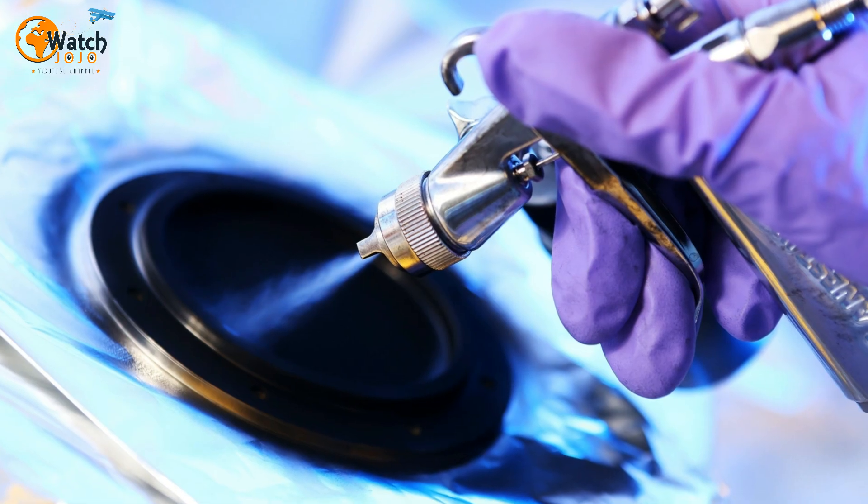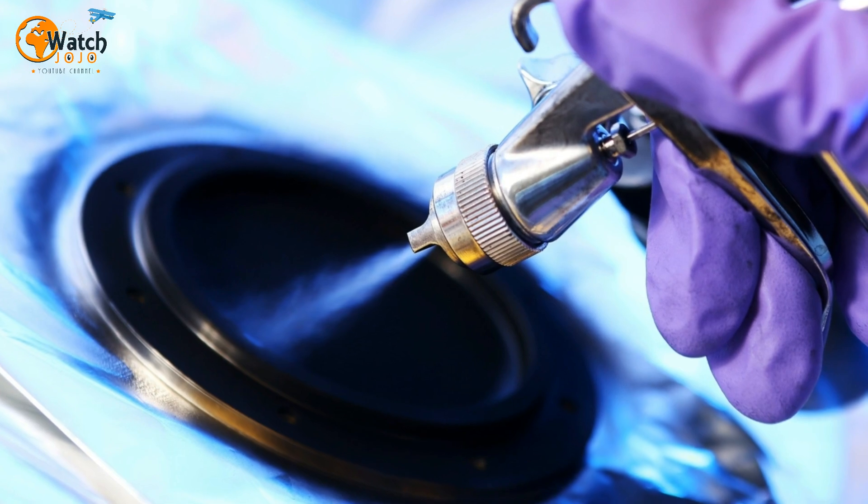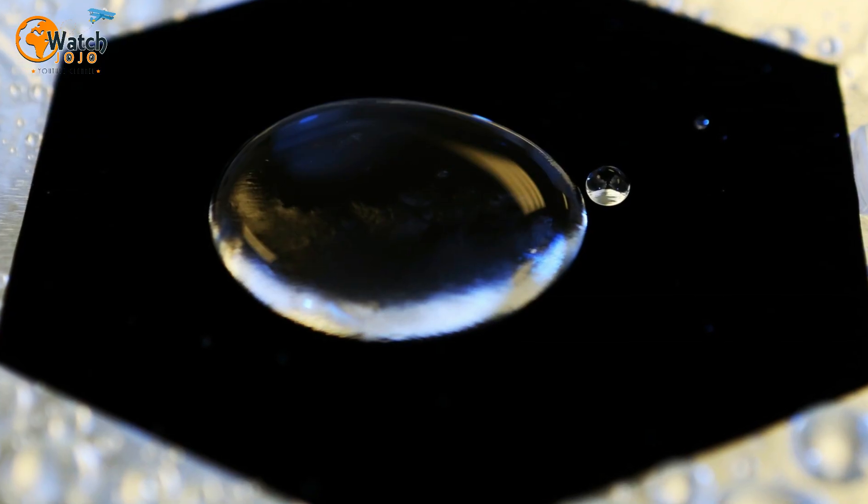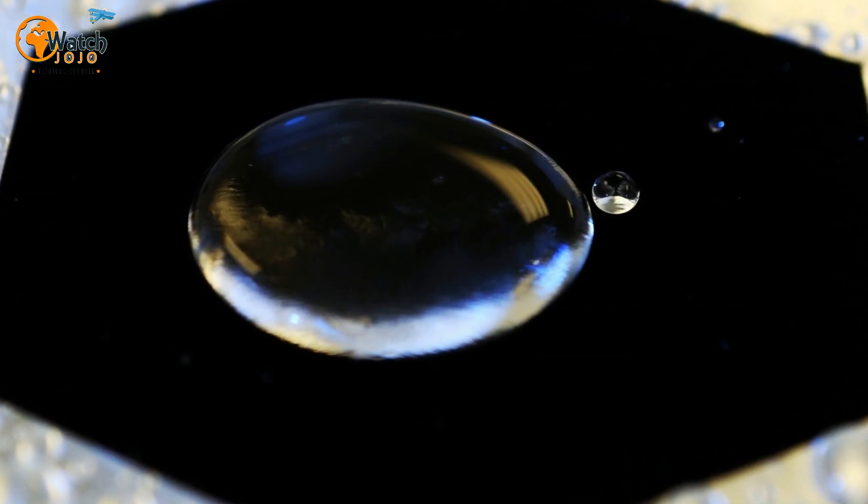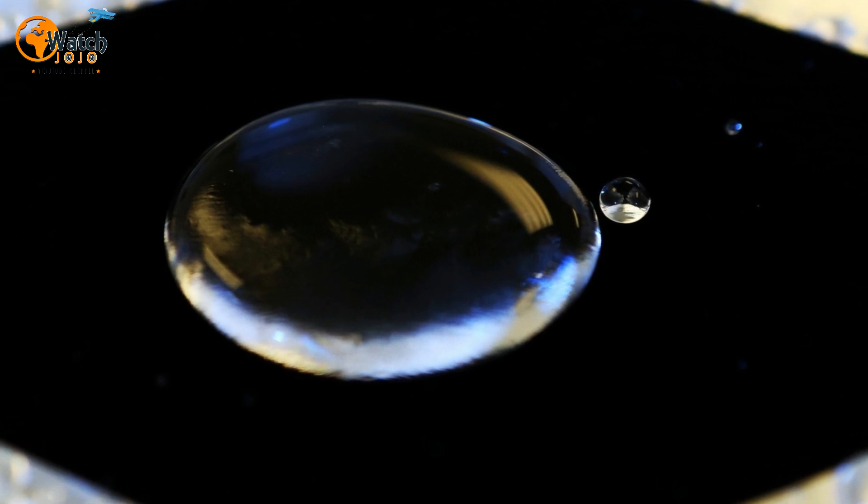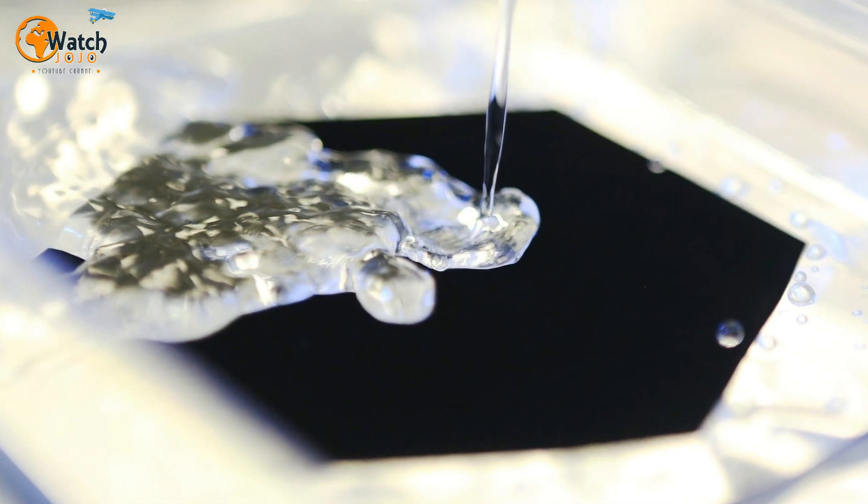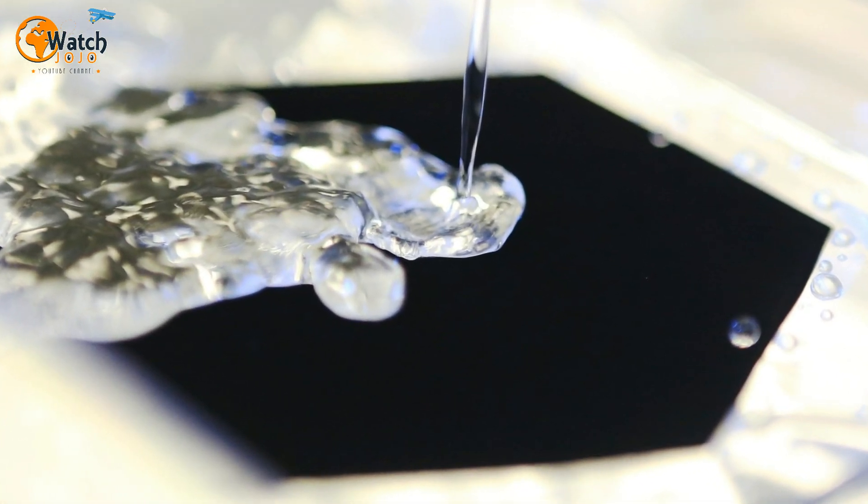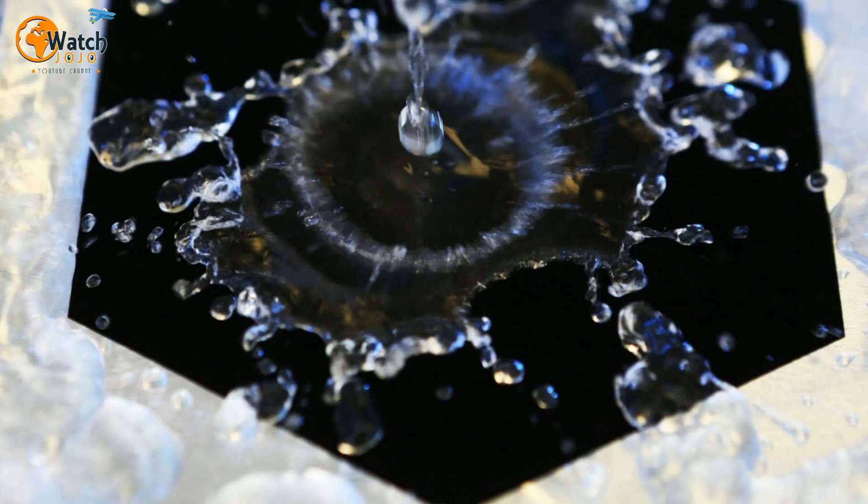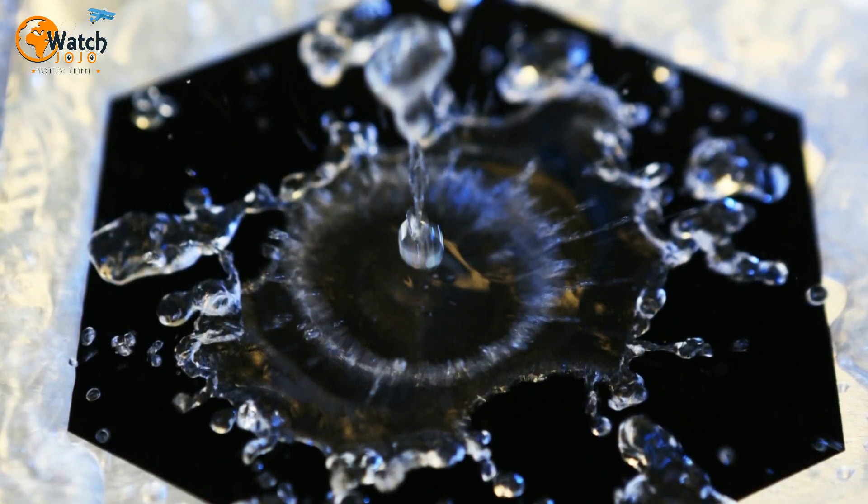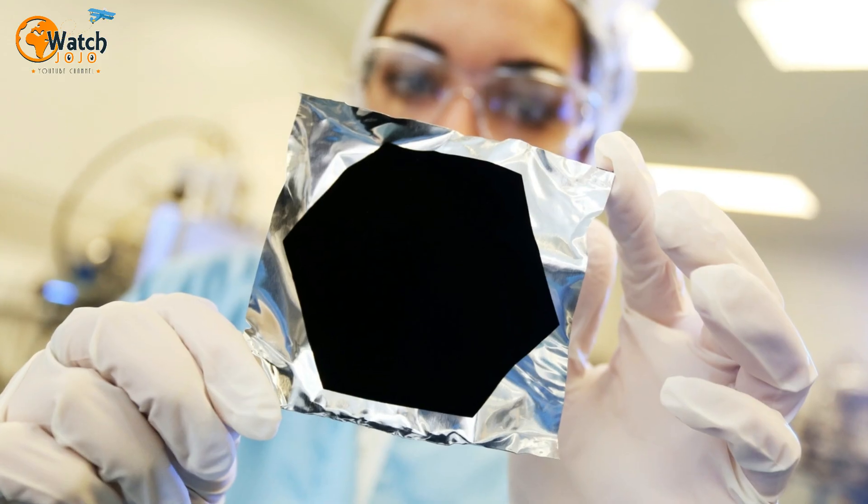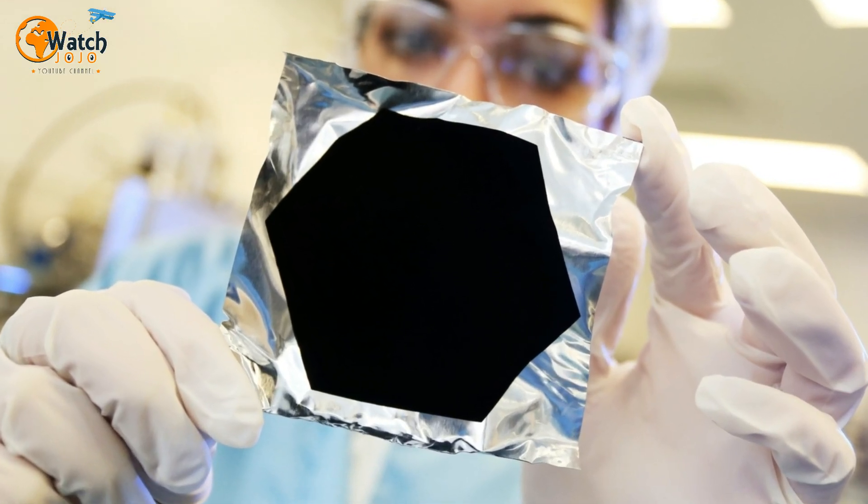Unlike Vantablack, the Vantablack SVIS is easier to apply and can be used on large surfaces. However, that doesn't mean it has no drawbacks. For instance, the surface it's applied to should be well protected because Vantablack SVIS cannot withstand the ravages of time.